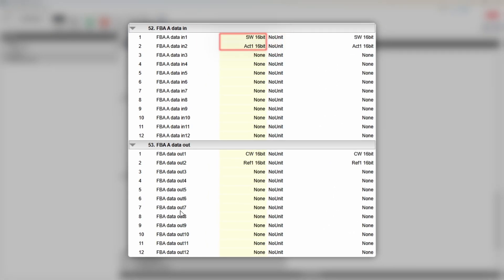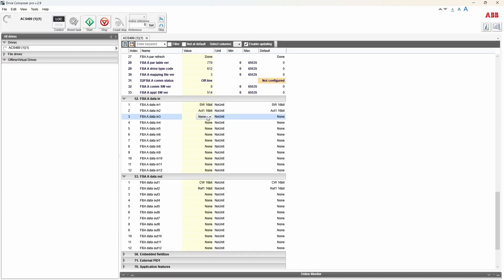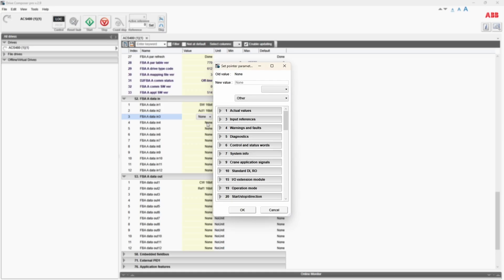In groups 52 and 53 you can set which data the drive sends to and receives from the PLC cyclically. By default there is a bare minimum to control the drive: status word and actual speed as PLC input data, and control word and reference speed as output data. But you can obviously add more. Click on data in 3 and select other. In the pop-up window you have access to practically any parameter of the drive.